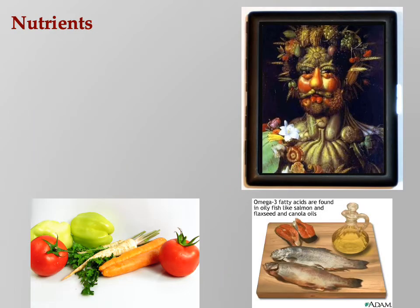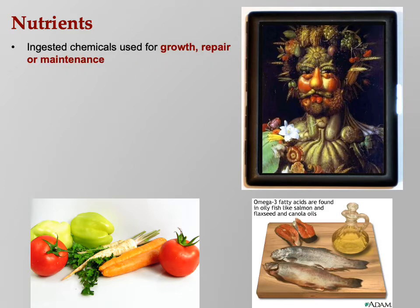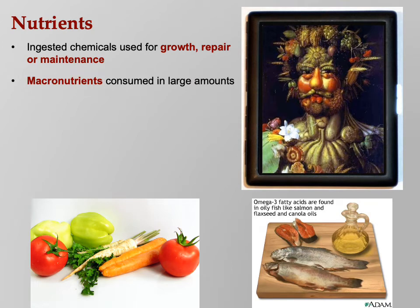Nutrients are things we put into our body for growth, repair, and maintenance. Macronutrients are things we need in large quantities. The three big macronutrients are proteins, fats, and carbs — you need all of those.